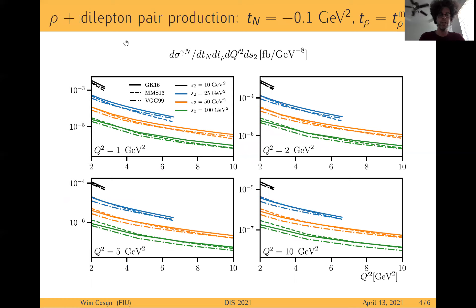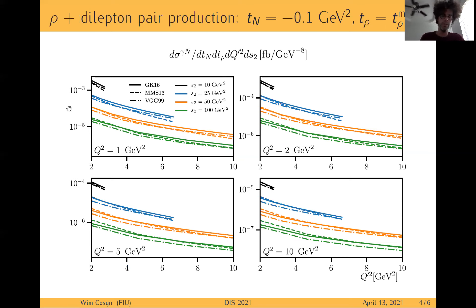For the dilepton production process, we plot things at the femtobarn level, with the virtuality of the incoming photon on one axis and the virtuality of the outgoing photon on the x-axis. We see very small cross-sections unless you go to quite low virtualities, where the model isn't supposed to work. So this does not look too promising right now.